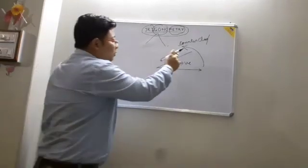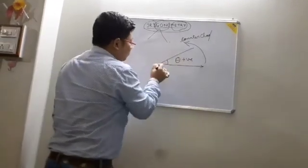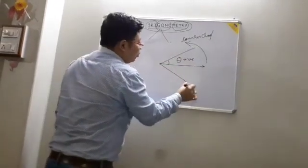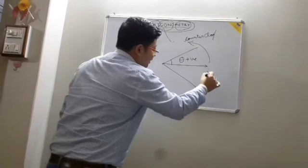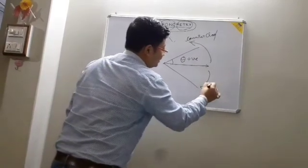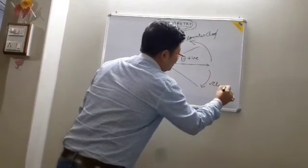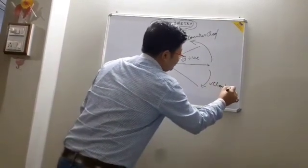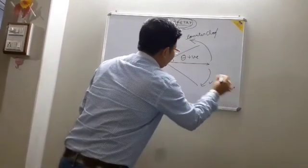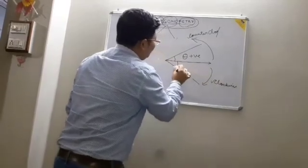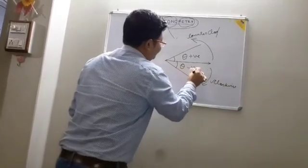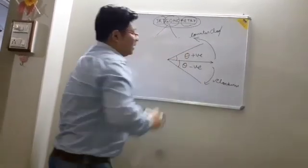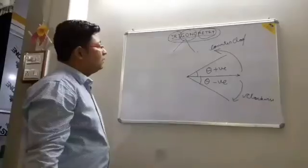If the revolving line moves towards the clockwise direction, then theta will always be negative. Have you understood this?